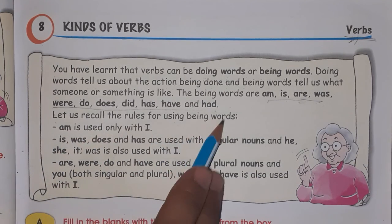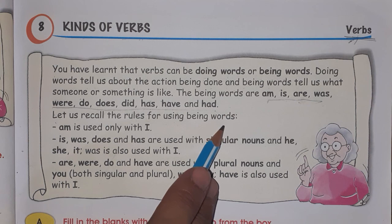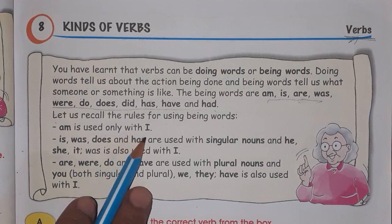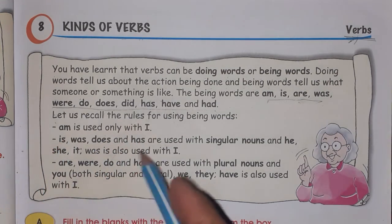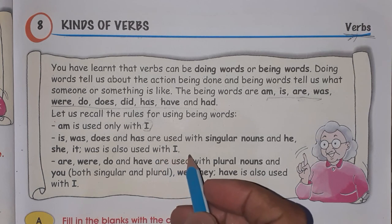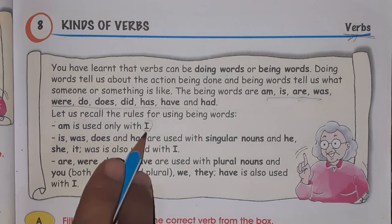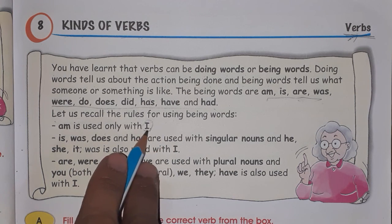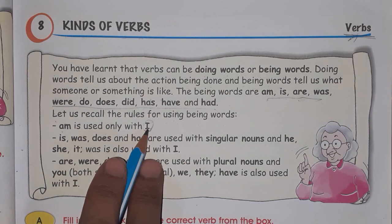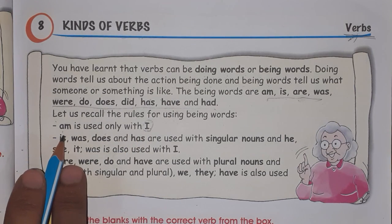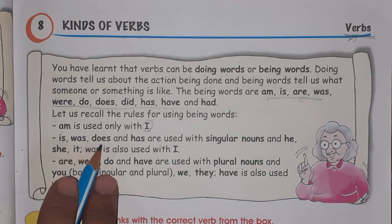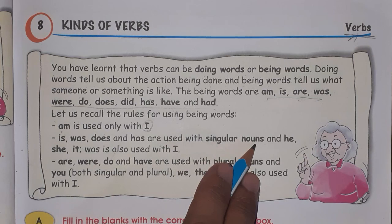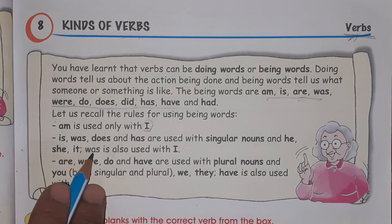Let us recall the rules for using being words. 'Am' is used only with 'I' — for example, 'I am a girl', 'I am a boy'. We never say 'I is a girl' or 'I is a boy'. So 'am' is always used with 'I'.